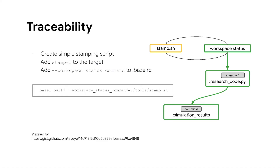Last but not least, let's talk about traceability. Researchers will share their results, send archives around, and we want to maintain reproducibility outside of the Bazel graph. We do this by integrating the stamping step into our Bazel graph — using the workspace status command option of Bazel build, you add an additional node that gets re-executed every time. This way we're able to include, for example, the git commit hash as part of the simulation results.